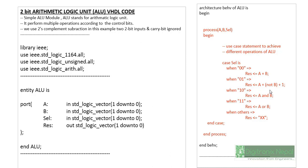The A minus B operation is implemented as A plus (NOT B) plus 1 — two's complement subtraction. When selection is `10`, we have A AND B; when selection is `11`, we have A OR B, assigned to `res`. When no condition is satisfied, the `when others` clause assigns the unknown value `XX` to `res`. We previously discussed nine logic states in standard logic data types, so `XX` is a valid unknown state.